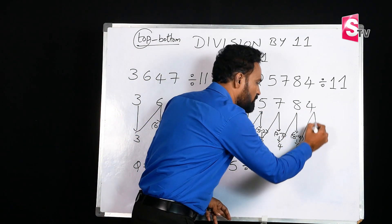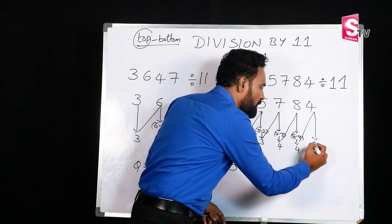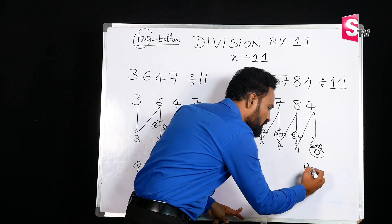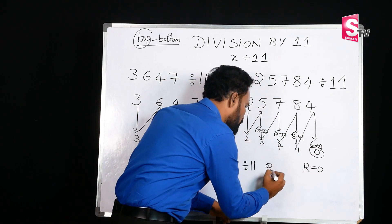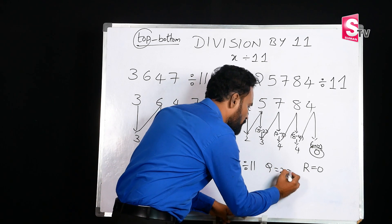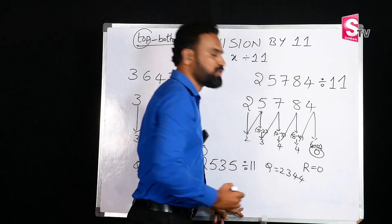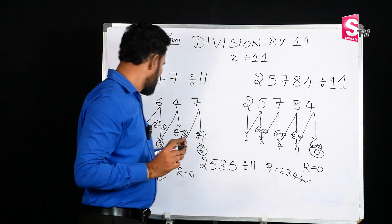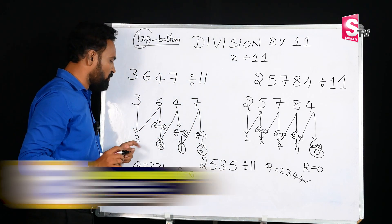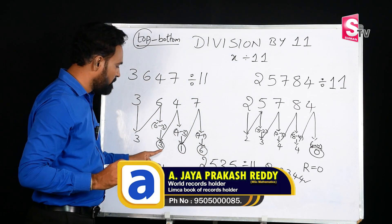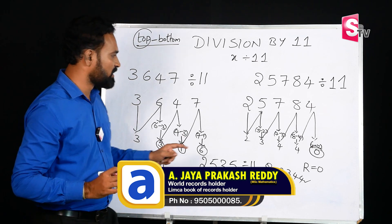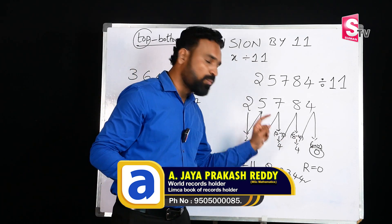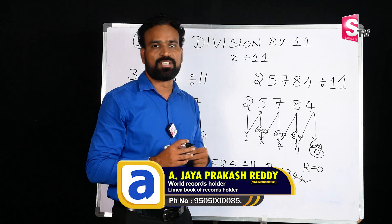4 minus 4, and then we have 0. So, the last digit: 4 minus 3. We have subtraction giving positive results. 6 minus 3, 4 minus 3, 5 minus 2, 8 minus 4 — all positive results.